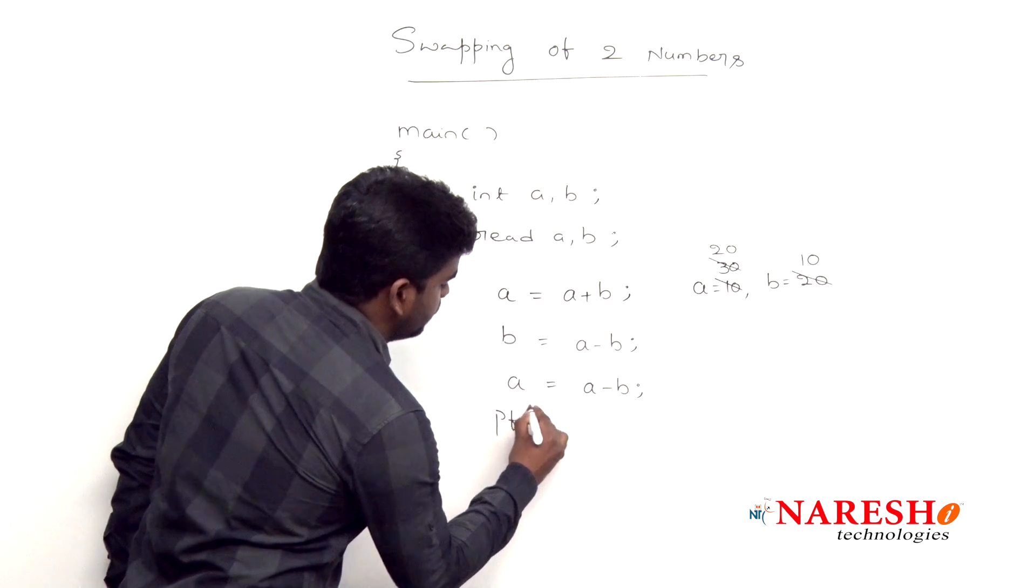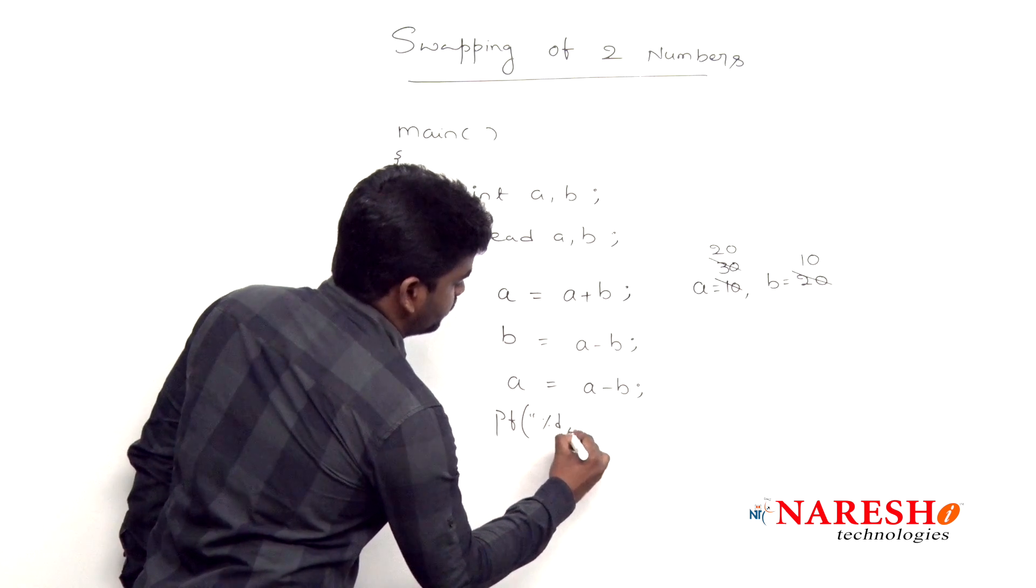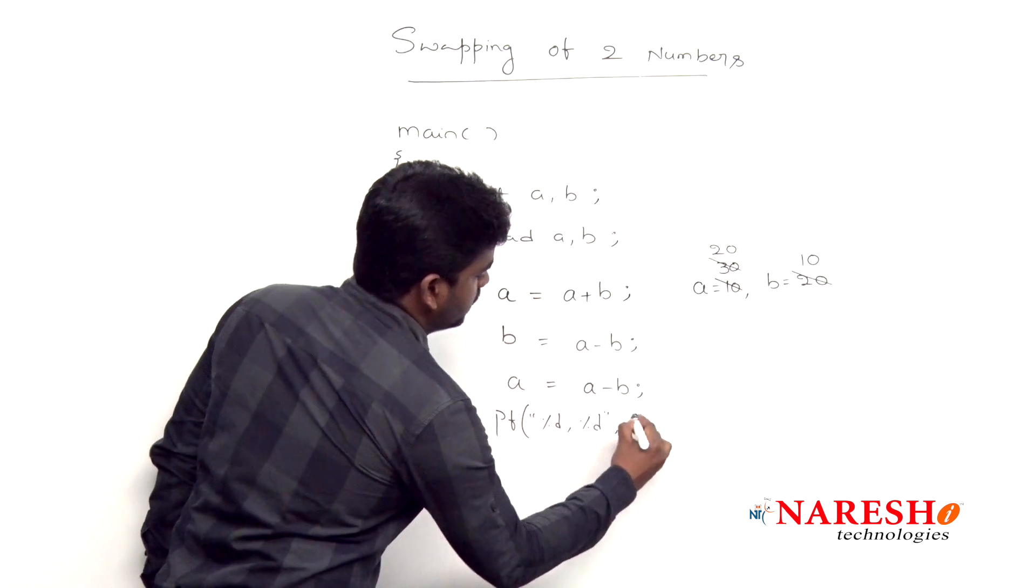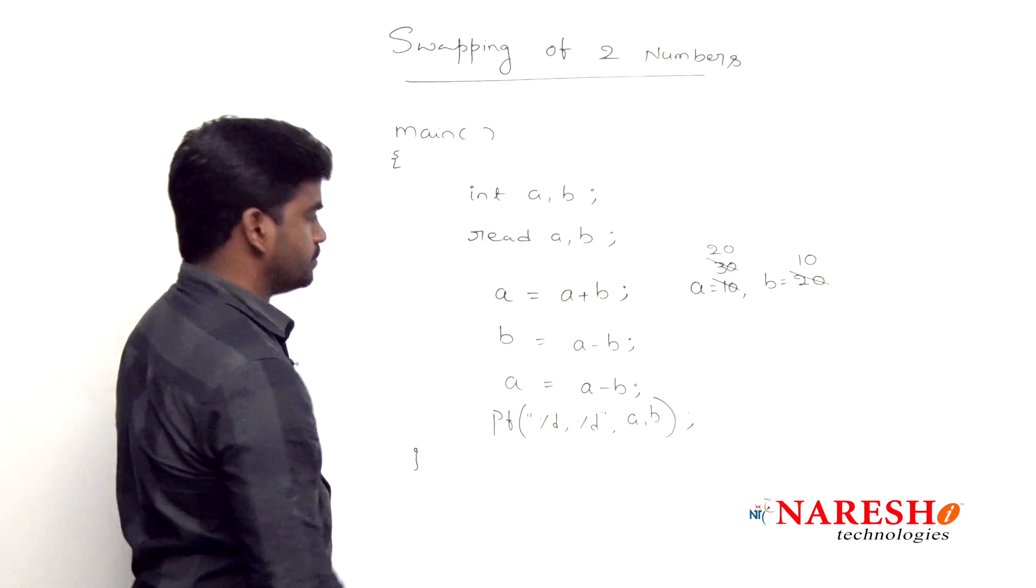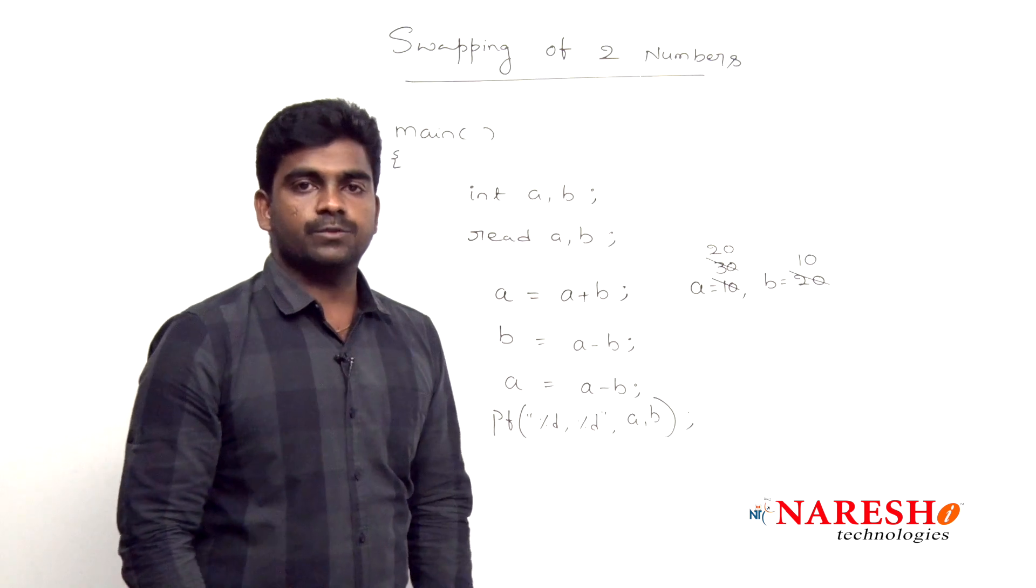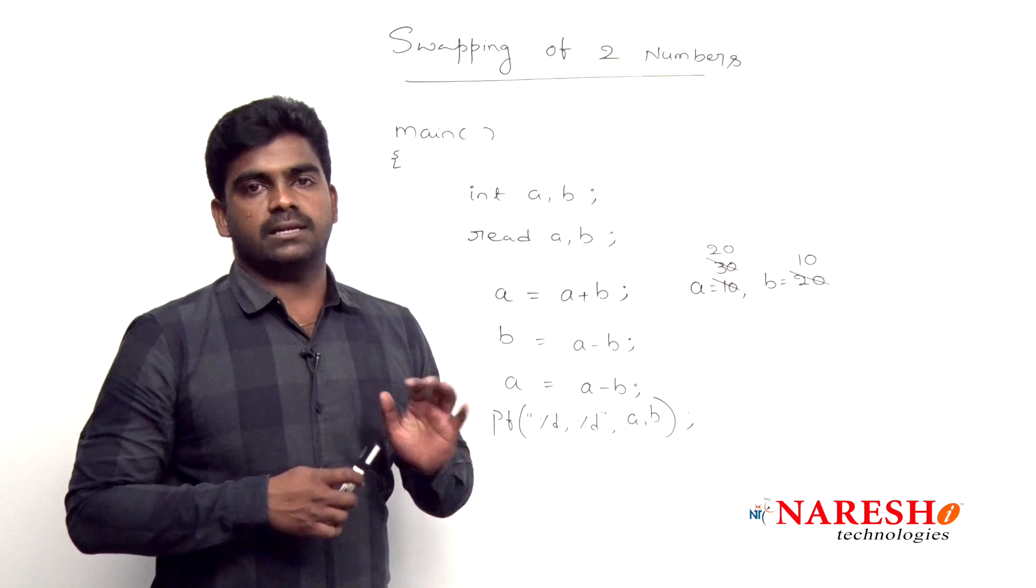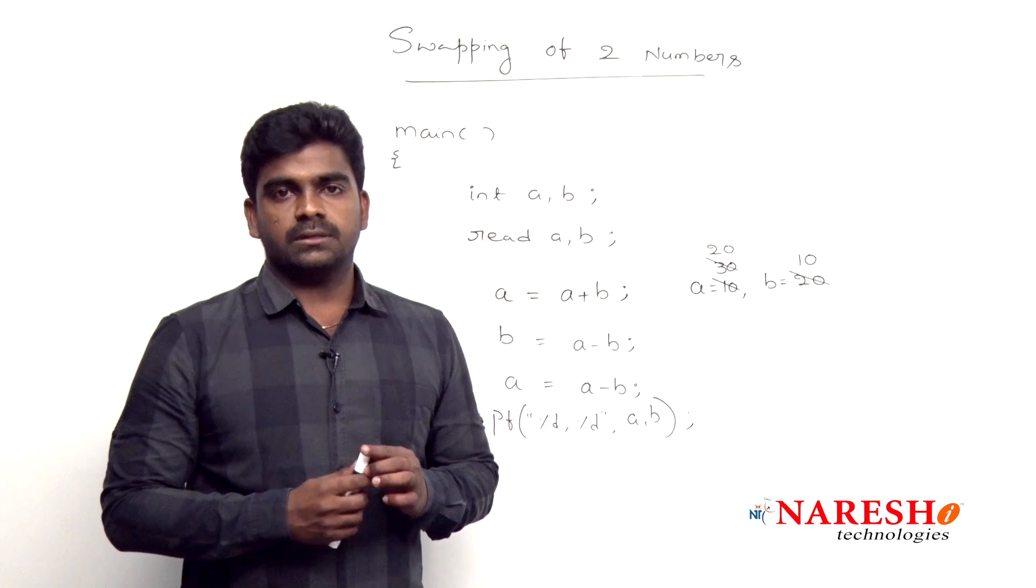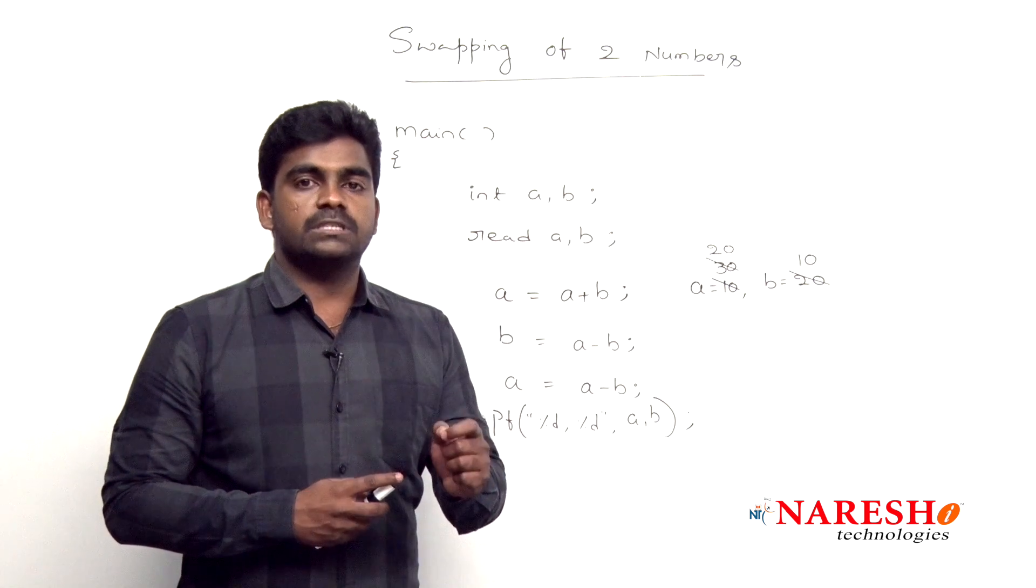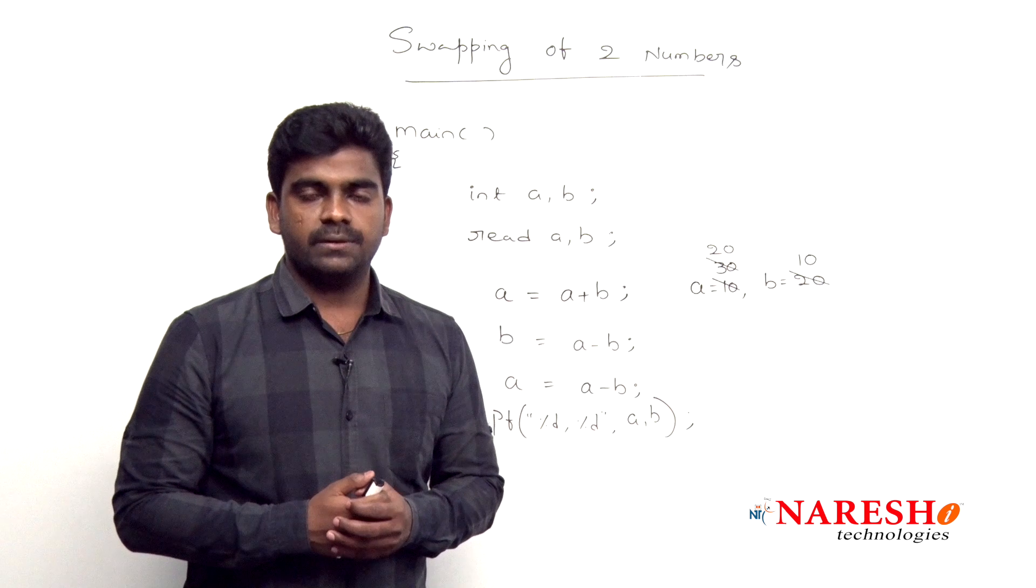Finally, whenever we are printing a and b, the values will be displayed automatically. So this is how to swap two numbers without using temporary variable. Thank you.